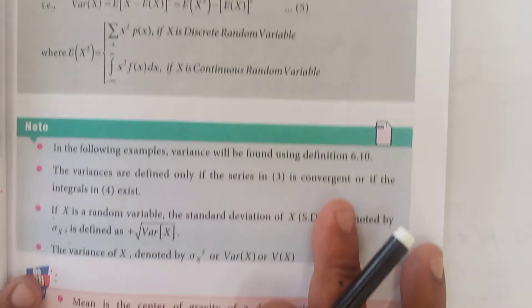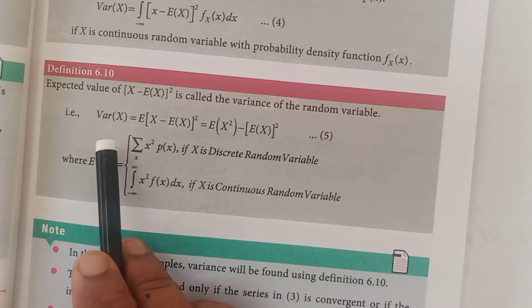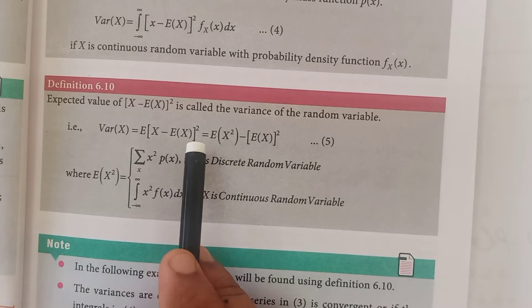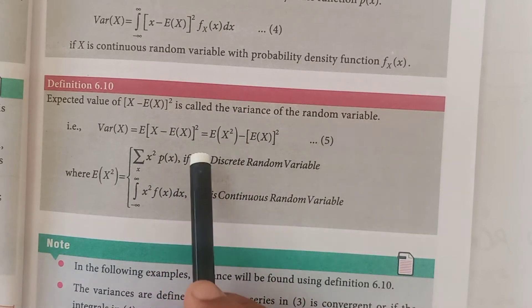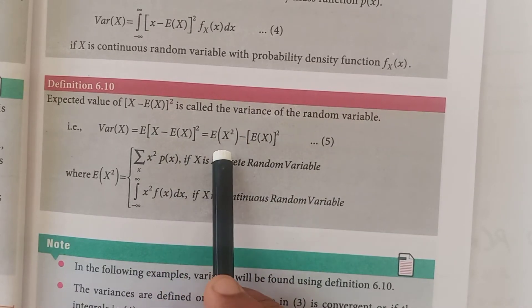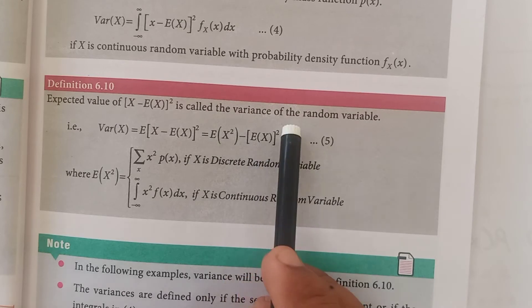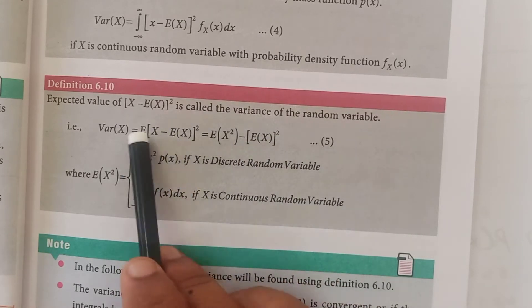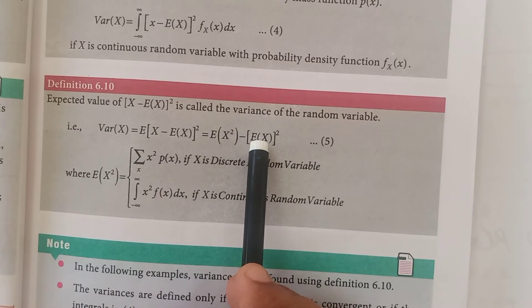Then variance of x. Variance of x that is equal to expectation of x minus e of x the whole square, equals e of x square minus e of x the whole square. You can make use of any one of the formulae.